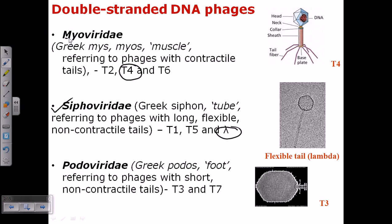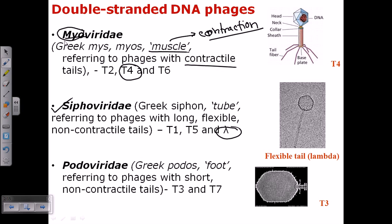T4 virus belongs to the group Myoviridae. 'Myo' is a Greek term meaning muscle, and muscle is associated with contraction. T4 phages have a contractile tail, which is why they are classified as Myoviridae. The third type, Podoviridae, comes from the Greek word for foot — it has a short, foot-like structure. So: Myoviridae has a contractile tail, Siphoviridae has a flexible tail, and Podoviridae has a foot-like structure.